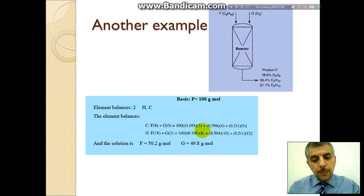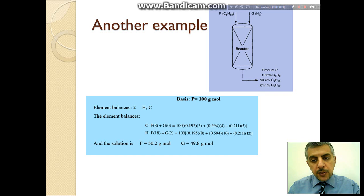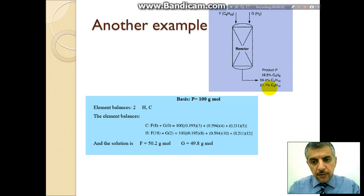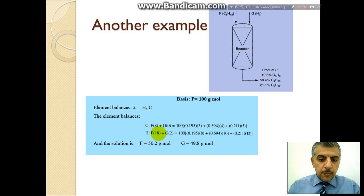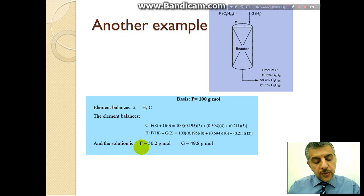Continuing the carbon element balance: plus four times the mole fraction of the next component times the total amount, plus five times the mole fraction of the last component times the total amount. This gives two independent equations with two unknowns.